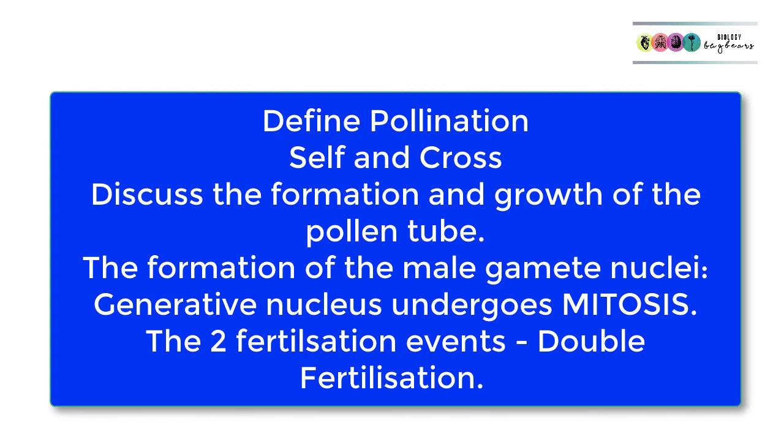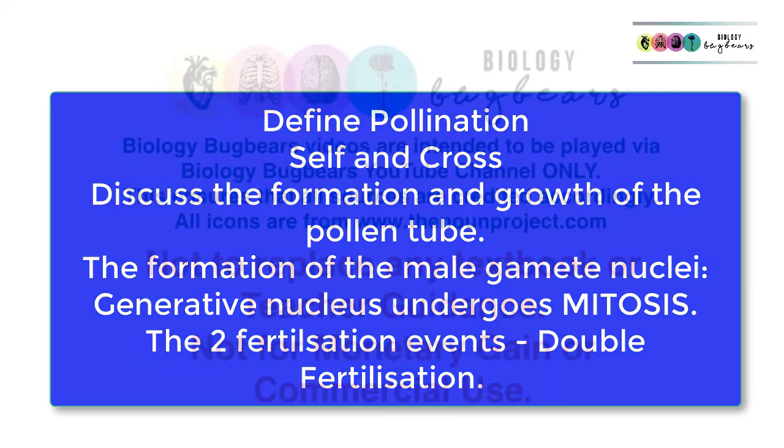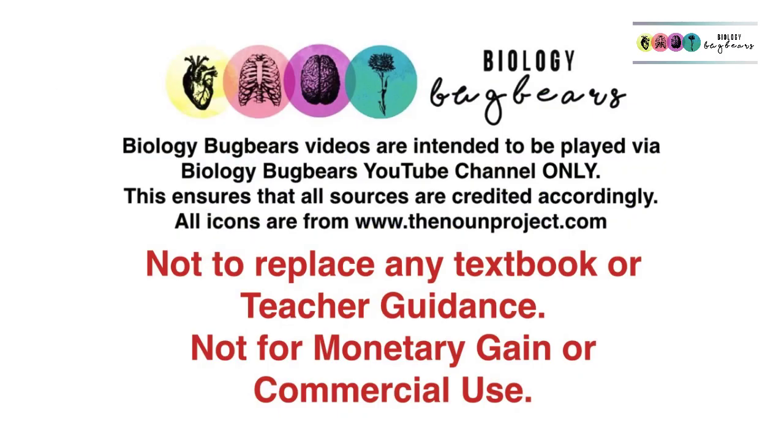So that's the end of video number three on sexual reproduction in flowering plants. You should be able to define pollination, distinguish between self and cross-pollination, discuss the formation of the pollen tube and the role of that tube nucleus, and also how those male gamete nuclei were formed by that generative nucleus undergoing mitosis in the pollen tube. Talk about the two fertilisation events, so remember there was double fertilisation. Best of luck with all of the revision, be sure to use past papers and check the answers.